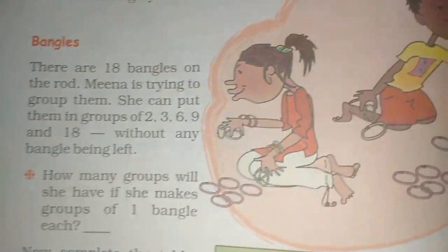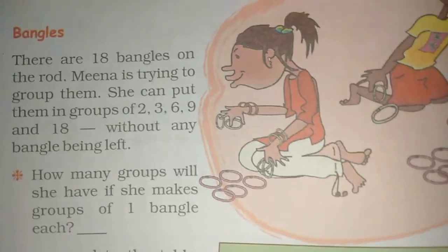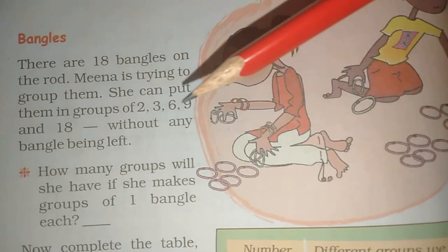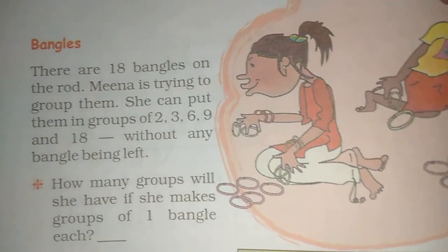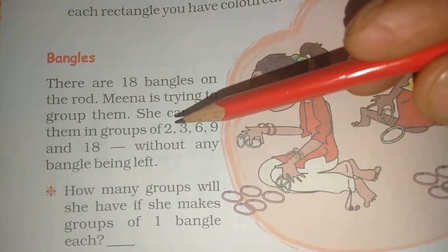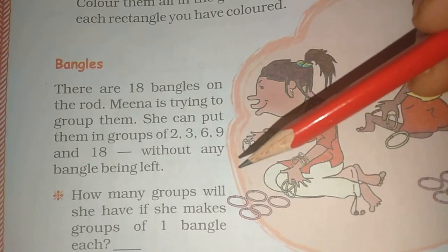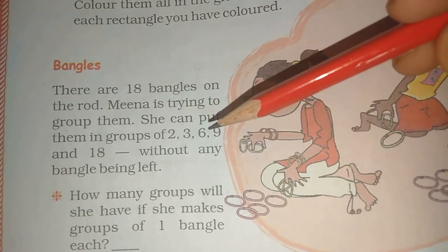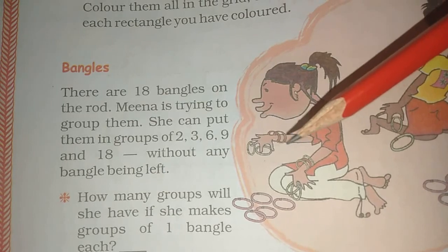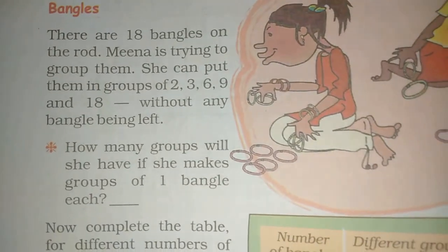Hi kids, hi sir. Bangles का मतलब क्या होता है? चूडिया। अब देखो, Meena के पास अठारा चूडिया है। She can put them in groups of 2, 3, 6, 9, and 18 without any bangle being left. अगर वह इनके groups बनाना चाहती है, तो कितने के groups बनेंगे?